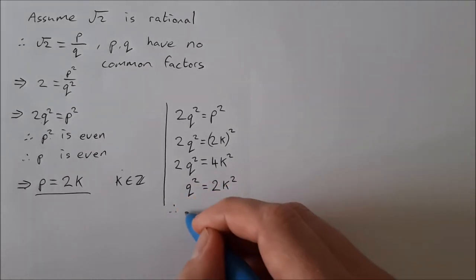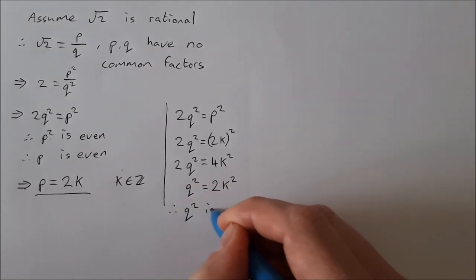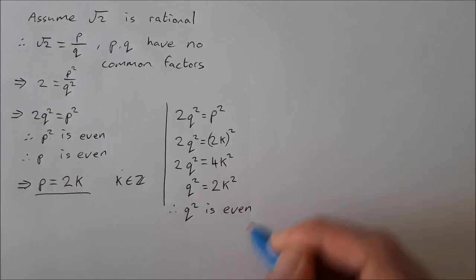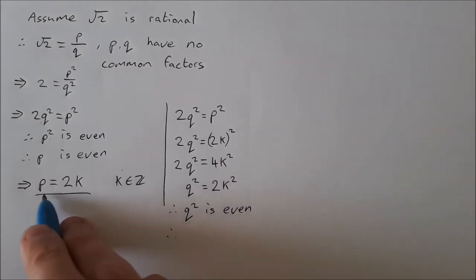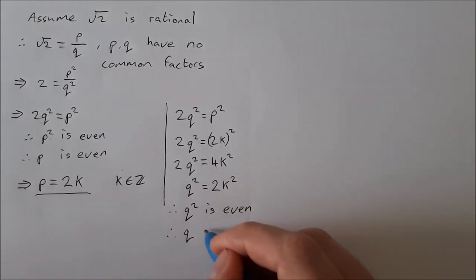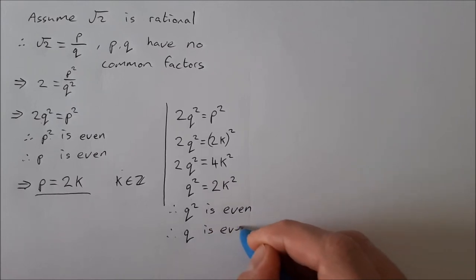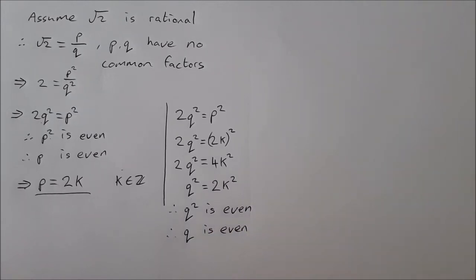Therefore q squared is even, and that again, same as up here, means that q is even, which again means that q can be written as 2 times a number. Let's call it m, so q can be written as 2 times m.